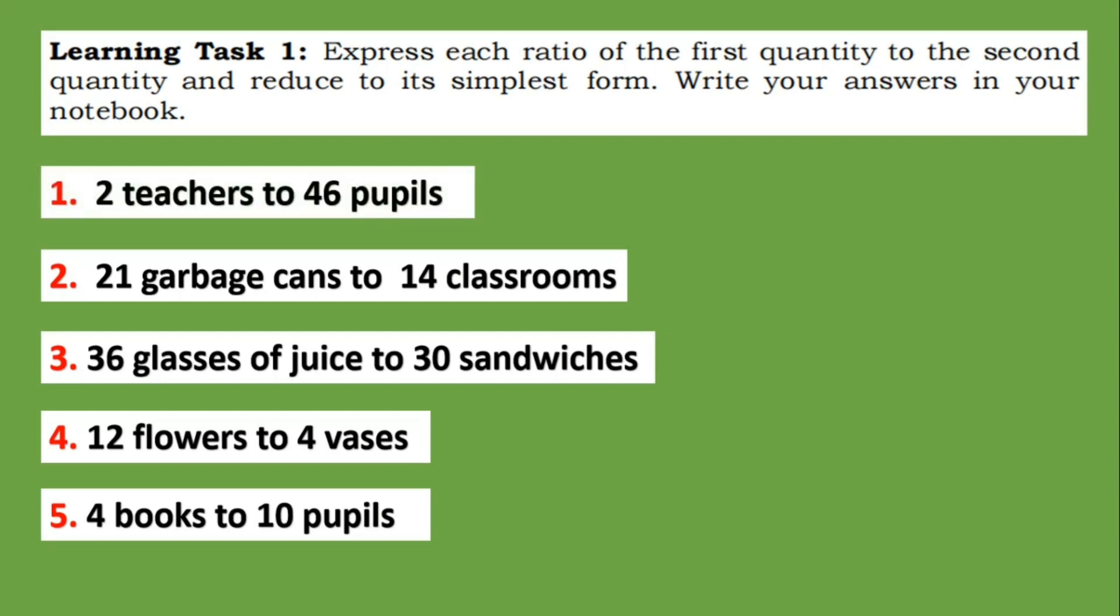So for number one, we have two teachers to forty-six pupils. So if we're gonna write this down as ratio, that would be 2:46. To get the lowest term, we need to find the GCF. So the GCF of two and forty-six is two. So we divide, two divided by two equals one, and forty-six divided by two equals twenty-three. So the lowest term is 1:23.